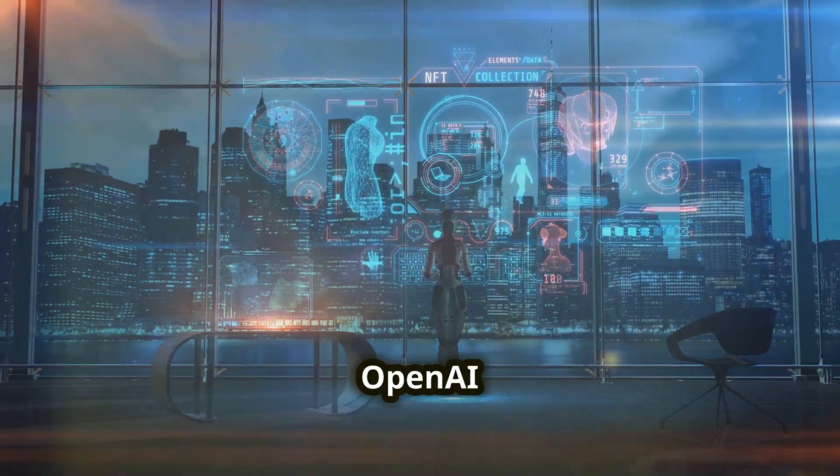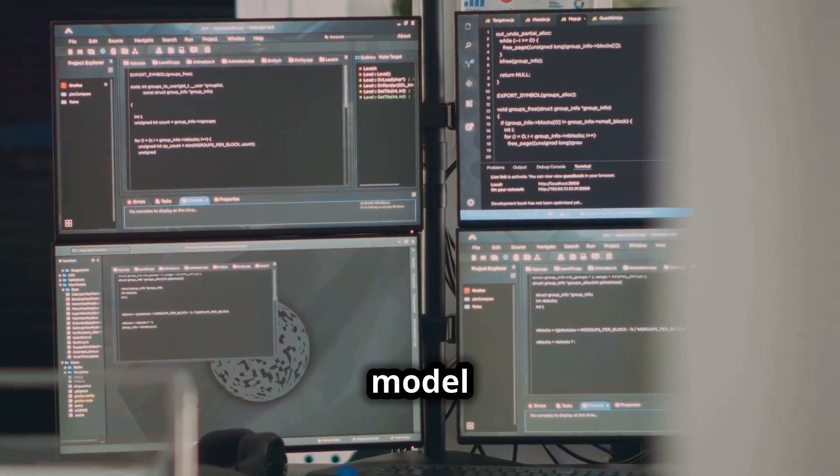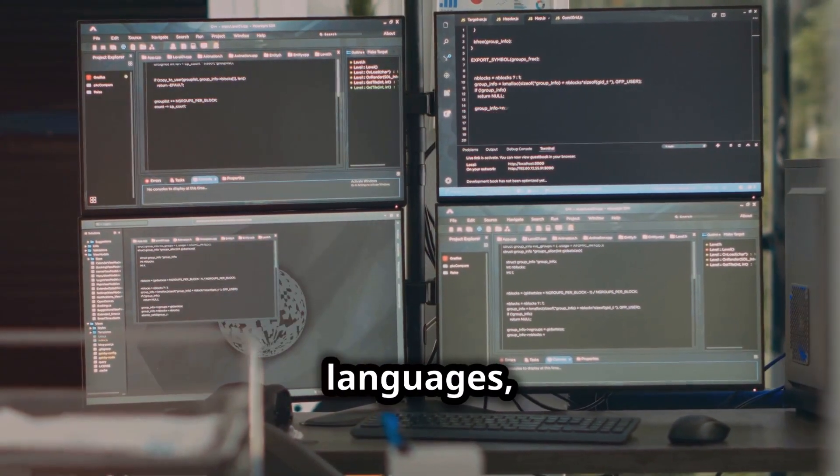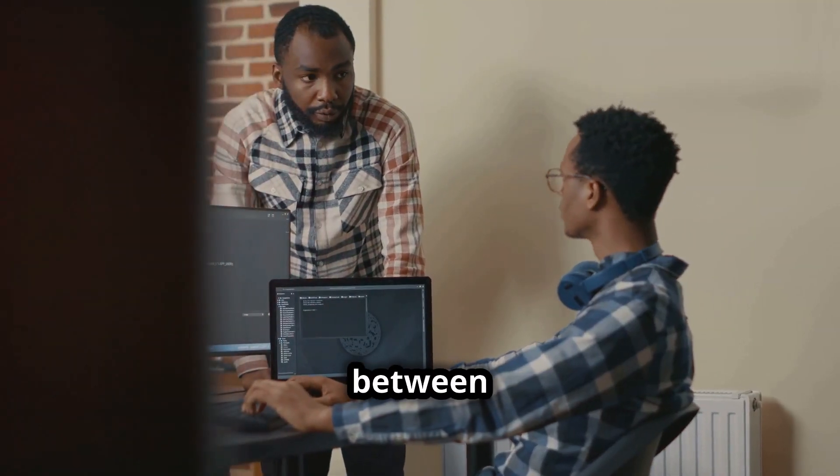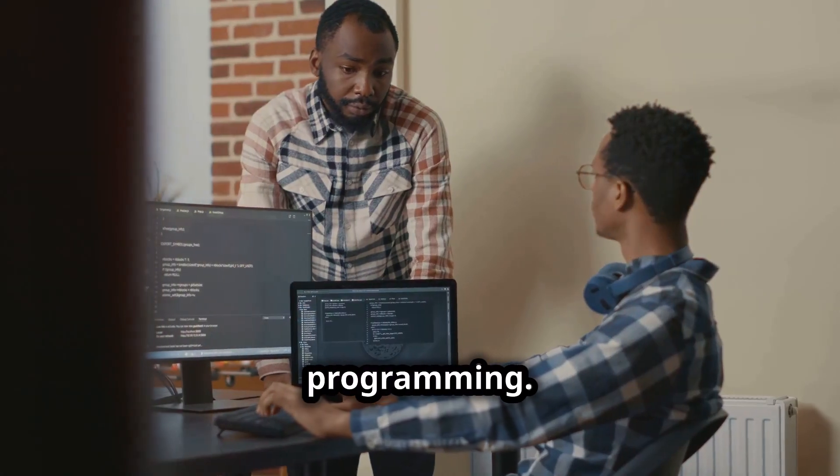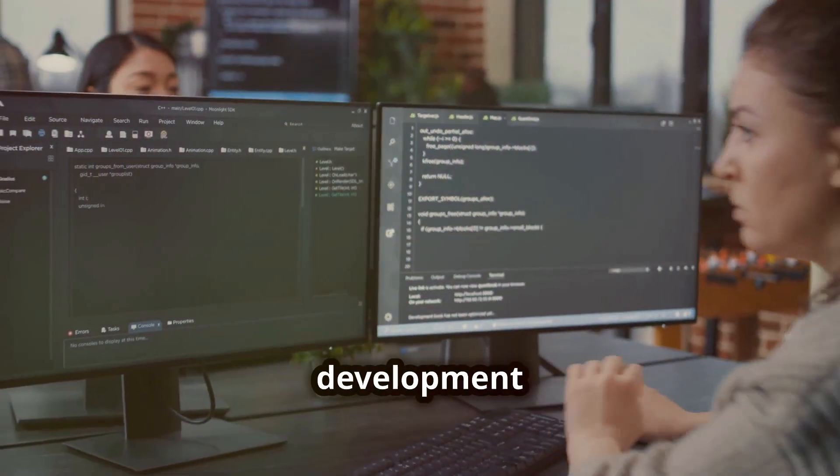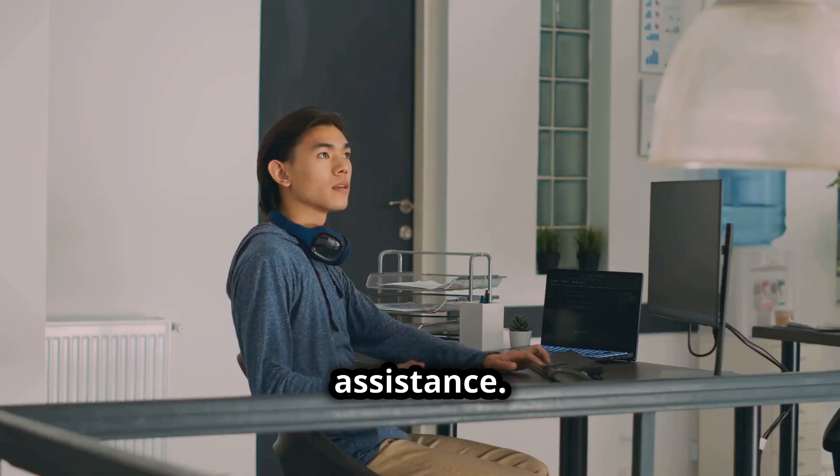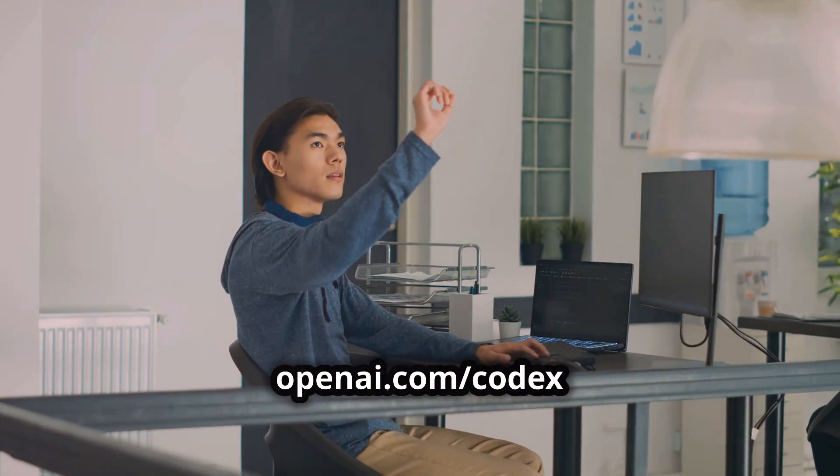Number 3. OpenAI Codex. This AI model is trained to understand and generate code in multiple programming languages, bridging the gap between natural language and programming. It streamlines software development processes and empowers developers with advanced coding assistance. Visit OpenAI.com/Codex to learn more.